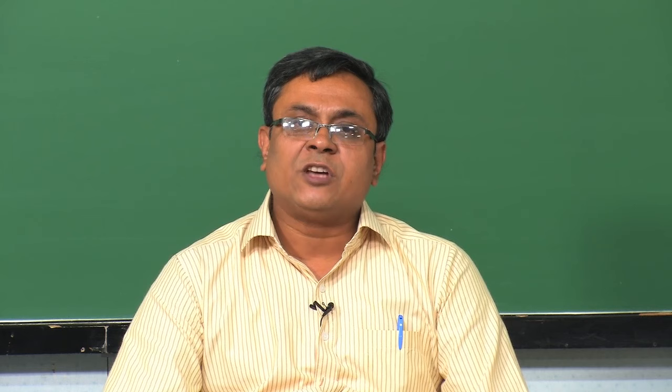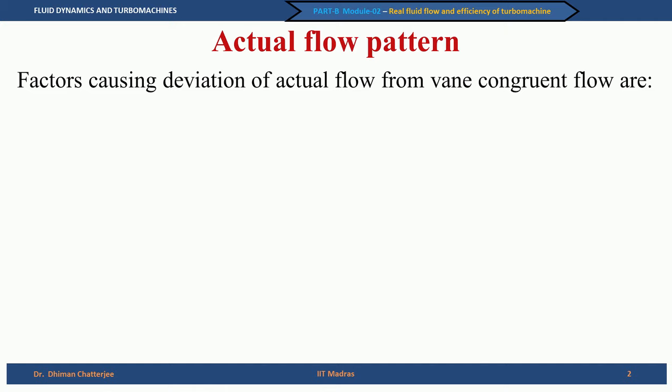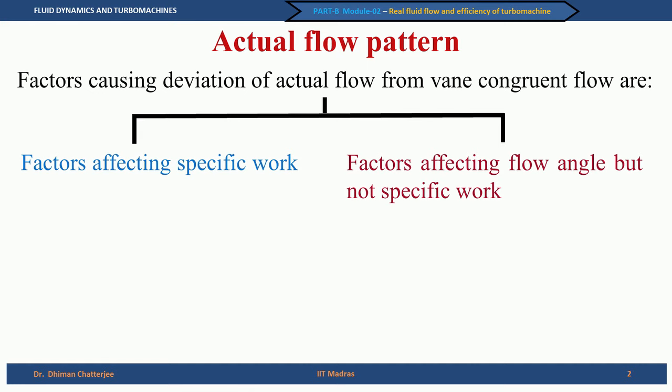I will not go into the details of real fluid flow, but I will talk about the different effects of real fluid flow that can be seen in the velocity triangles. Whenever we have a departure from ideal flow, we will get less performance from the idealized condition, and hence we will quantify this performance in terms of efficiency. So let us look at the actual flow pattern and what causes it — factors which make the vane congruent flow unrealistic.